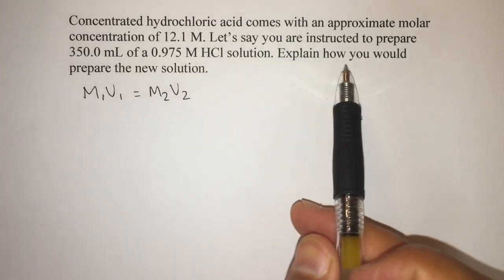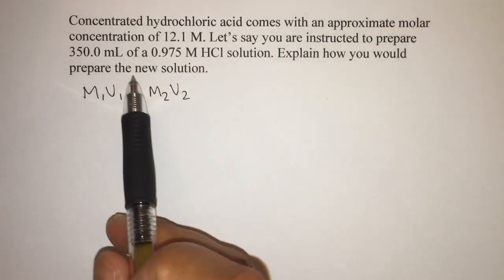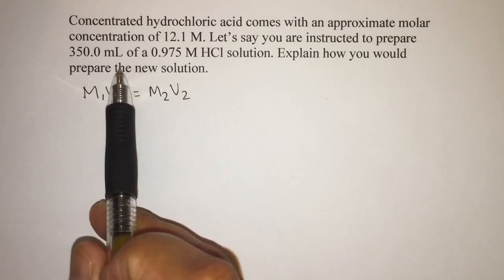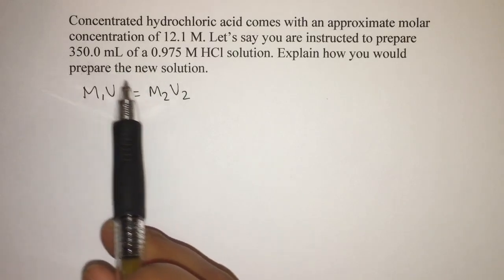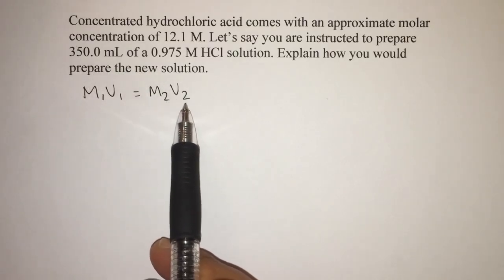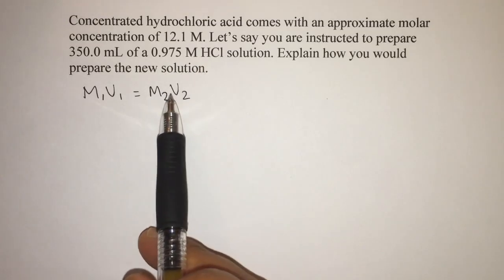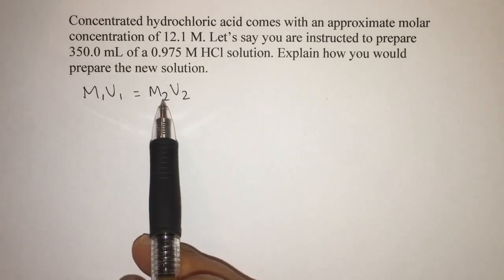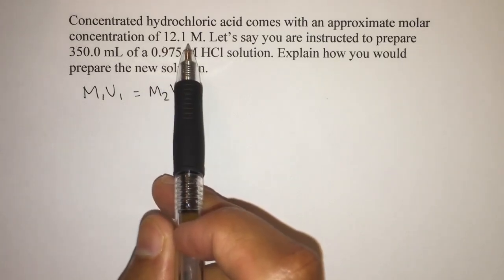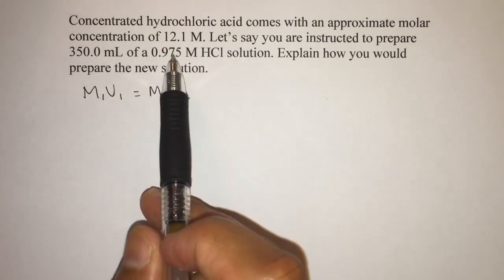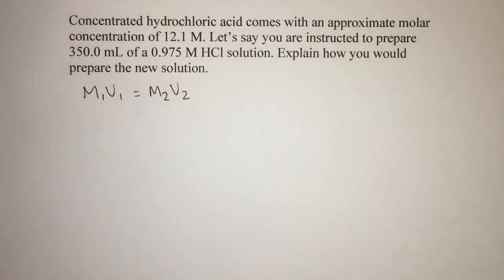So what's happening here is we're instructed to prepare. So this is going to be our new solution. So the 350 ml is going to be our V2. The 0.975 molar HCl will be our M2. And notice that our initial concentration is given to us. Our M1 is going to be our 12.1 molar.